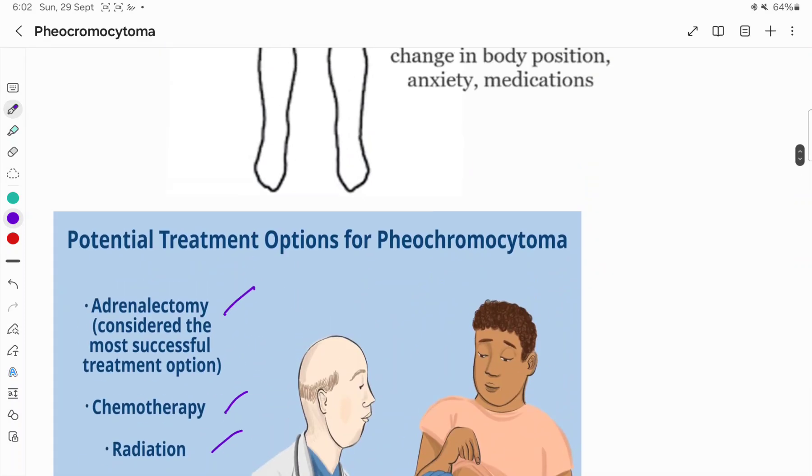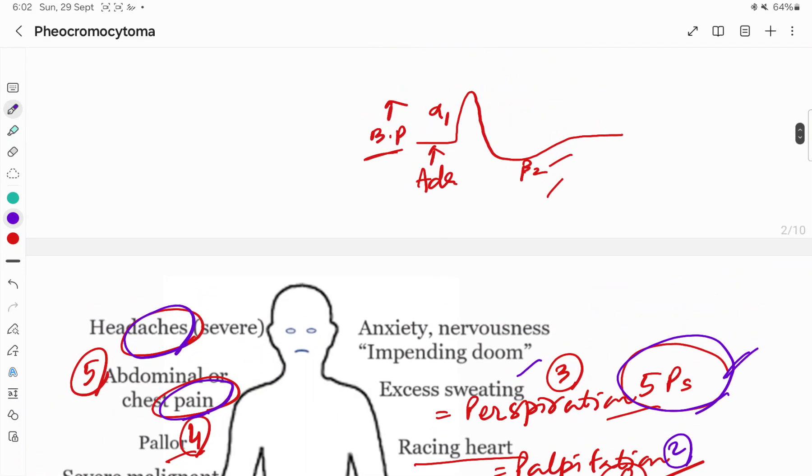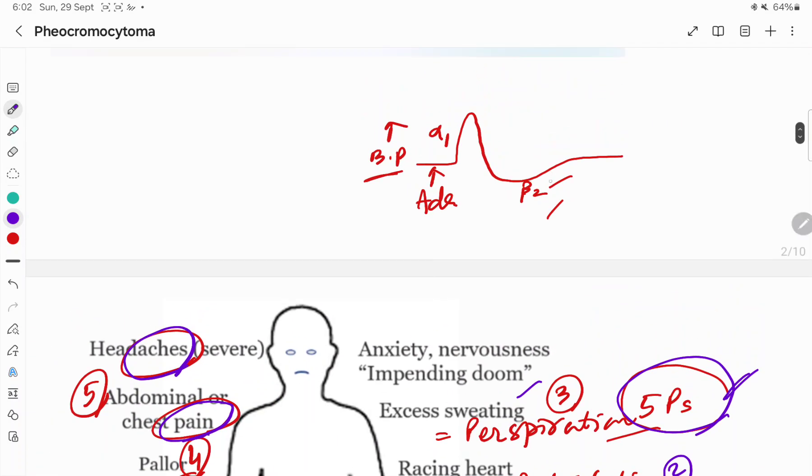If beta blockers are used initially, then there will be only alpha-1 action and that will result in hypertensive crisis if we use the beta blockers. So beta blockers should not be used initially.